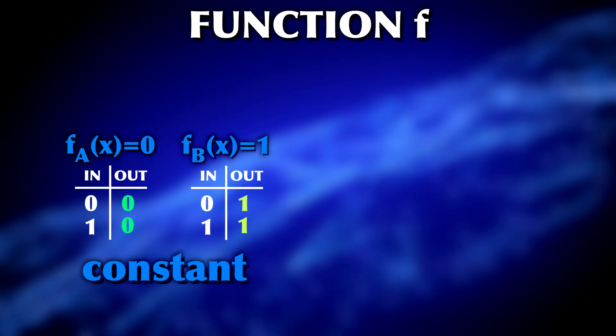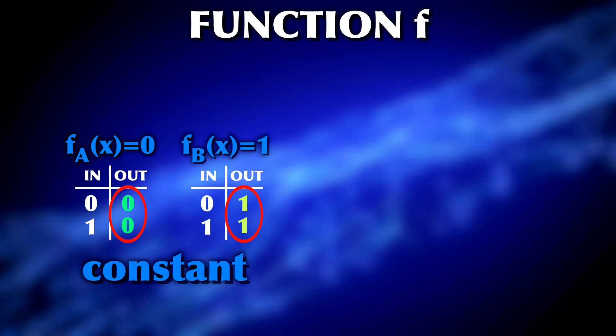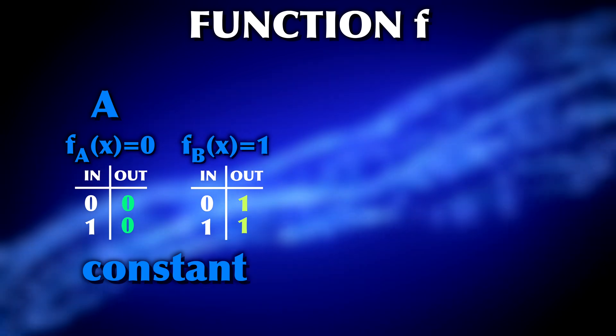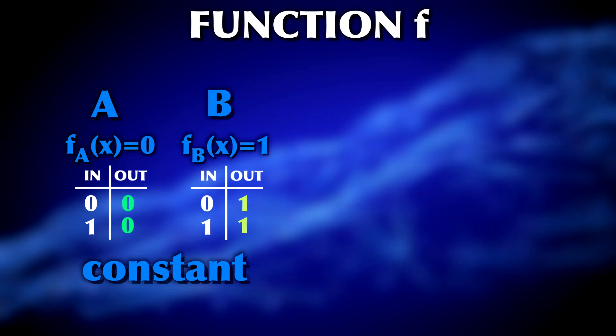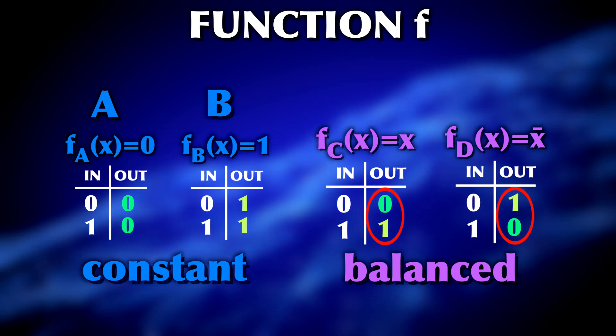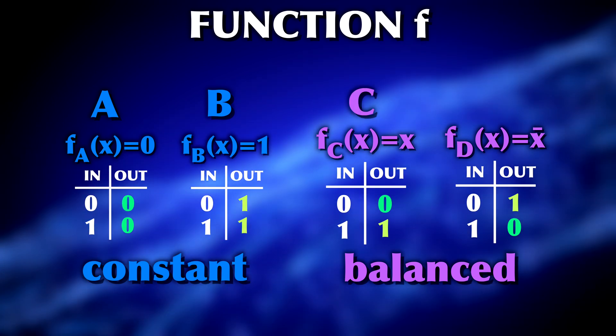For starters, there is an unknown function f that is either constant, so it gives identical output for different inputs. We'll call these cases a and b. Or it is balanced, so it gives different outputs for different inputs. We'll call these cases c and d.